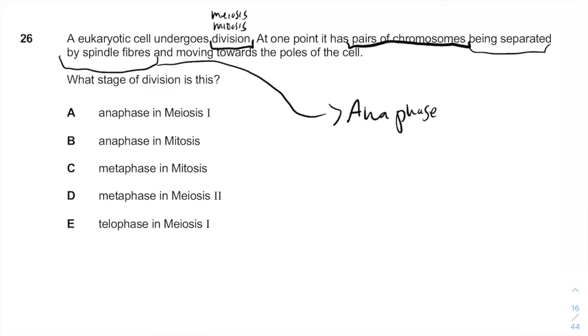But pairs of chromosomes should immediately tell you meiosis. Because in meiosis 1 we have pairs of chromosomes, unlike mitosis.